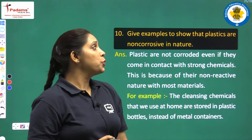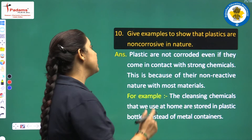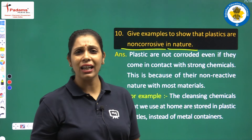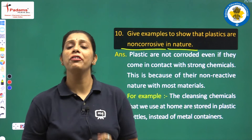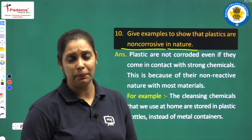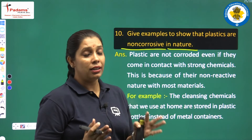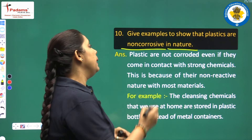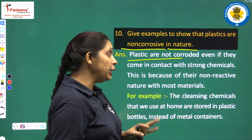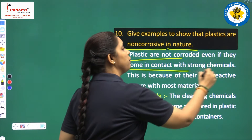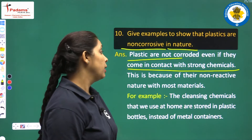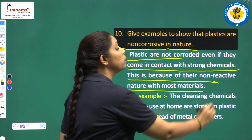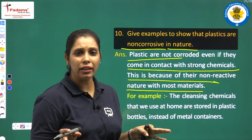Give examples to show that plastics are non-corrosive in nature. Plastics are non-reactive — they do not rust and do not react with chemicals. Plastics are not corroded even when they come in contact with strong chemicals. This is because of their non-reactive nature with most materials.